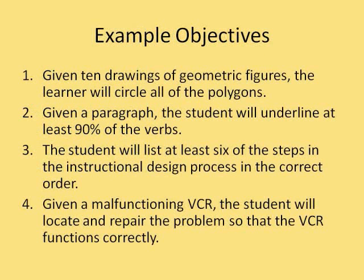Here are four examples of objectives using the ABCD model. 1. Given ten drawings of geometric figures, the learner will circle all of the polygons. 2. Given a paragraph, the student will underline at least 90% of the verbs. 3. The student will list at least six of the steps in the instructional design process in correct order. 4. Given a malfunctioning VCR, the student will locate and repair the problem so that the VCR functions correctly.